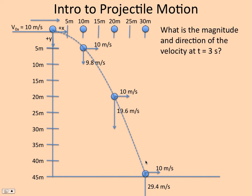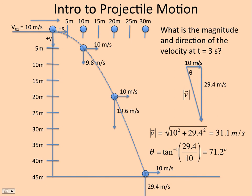What is the magnitude and direction of the velocity at t equal 3? Let's redraw the final moment here. We have a component of 10 and a component of 29.4, and we want to figure out theta. 29.4 is opposite. The 10 is adjacent. So we could use an inverse tangent of the opposite over the adjacent, 71.2 degrees.